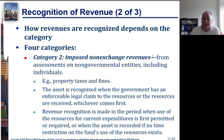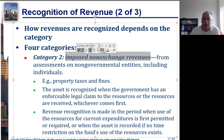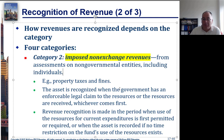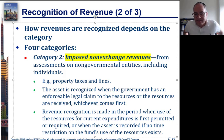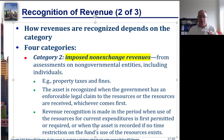Category two is imposed non-exchange revenues, and the main example is property taxes. Revenue is recognized when the government has an enforceable legal claim to the resources or when the resources are received, whichever comes first. Once you assess property taxes, you can record it as revenue because you know you're going to get it. Recognition is also made when use of the resources for current expenditures is first permitted or required, or when the asset is recorded if no time restriction on use of the resources exists.